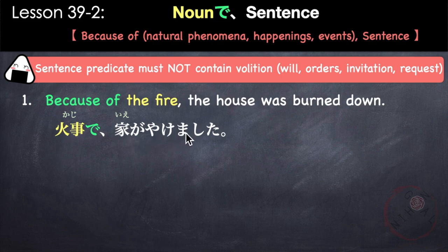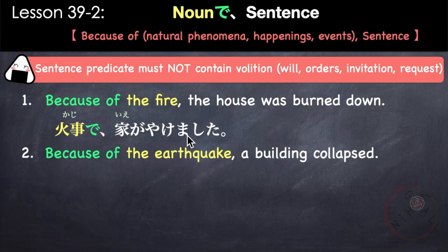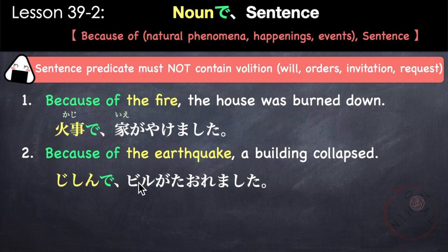Another example: 地震で、ビルが倒れました。 Jishin de, biru ga taoremashita. Because of the earthquake, a building collapsed. The verb taoremasu (to fall down/collapse) is also intransitive. Another: Because of the typhoon, bullet trains have stopped.